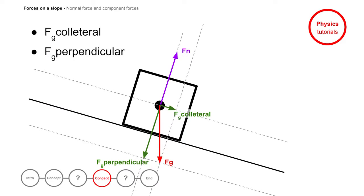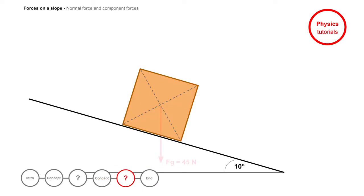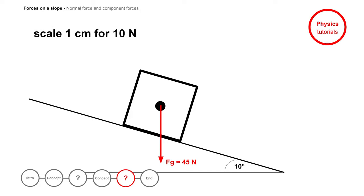Is this clear to you? Give it a try. This box is placed on a slope of 10 degrees. The force of gravity pulling the box down is 45 newtons. Draw this situation into your notebook. Use the scale 1 centimeter for 10 newtons and add the component forces.